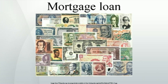Mortgage lending will also take into account the perceived riskiness of the mortgage loan — that is, the likelihood that the funds will be repaid, usually considered a function of the creditworthiness of the borrower; that if they are not repaid, the lender will be able to foreclose and recoup some or all of its original capital; and the financial, interest rate risk and time delays that may be involved in certain circumstances.